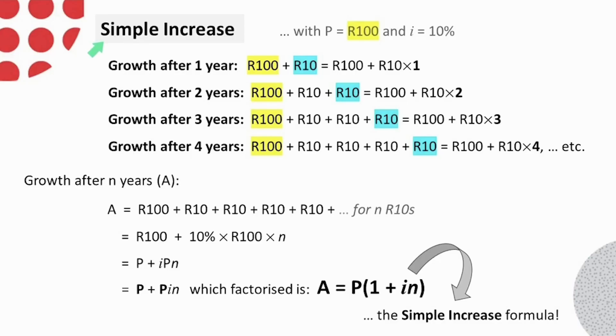Looking first at simple increase, to calculate the interest after one time period, in this case one year, we calculate 10% of 100 rand, which is 10 rand. Because for simple increase, the interest is always calculated on the original amount, the interest added each year remains 10 rand. Therefore, after the first year, the simple increase A would be 110 rand.